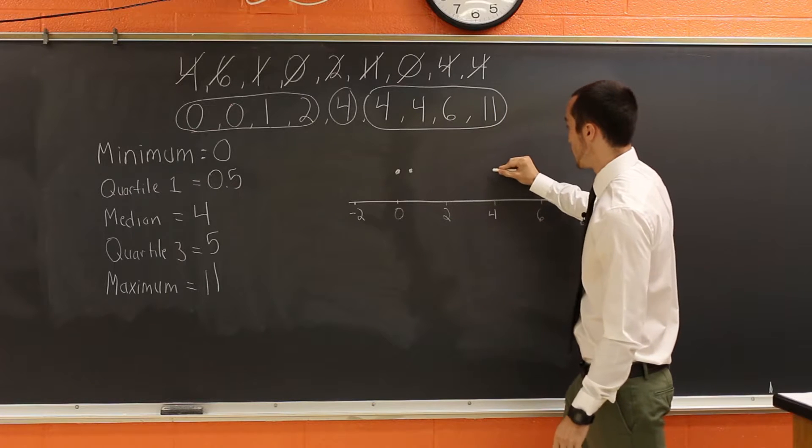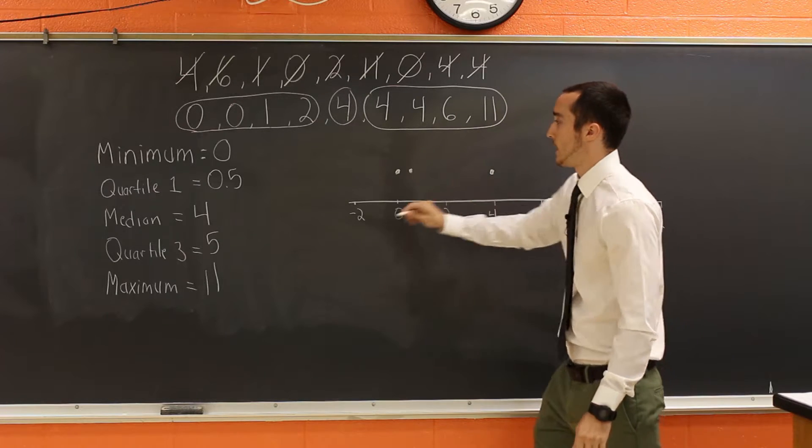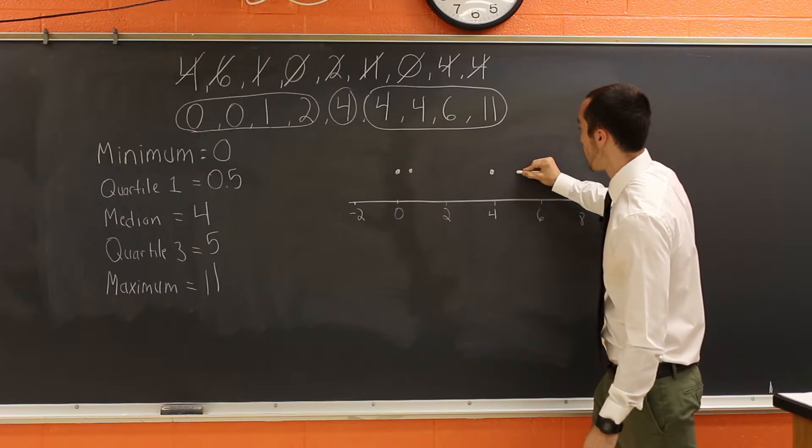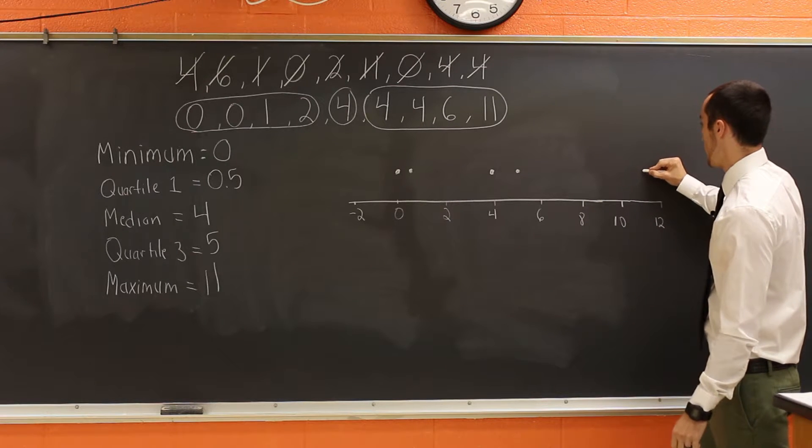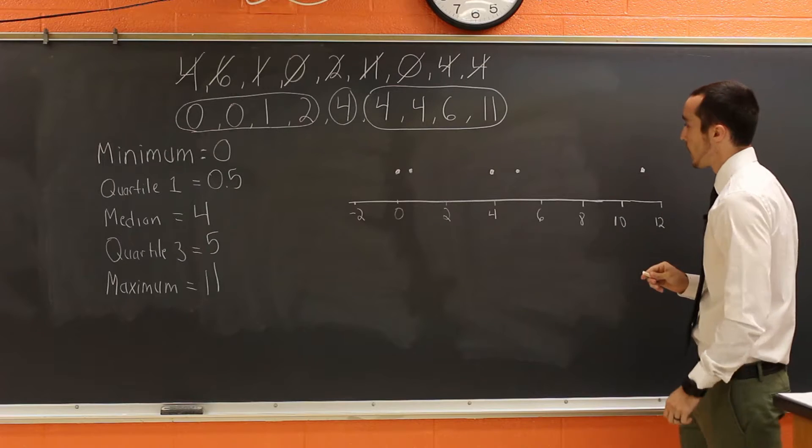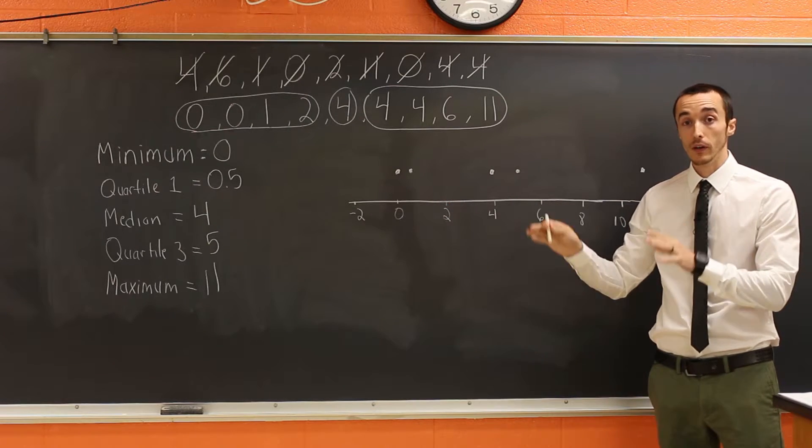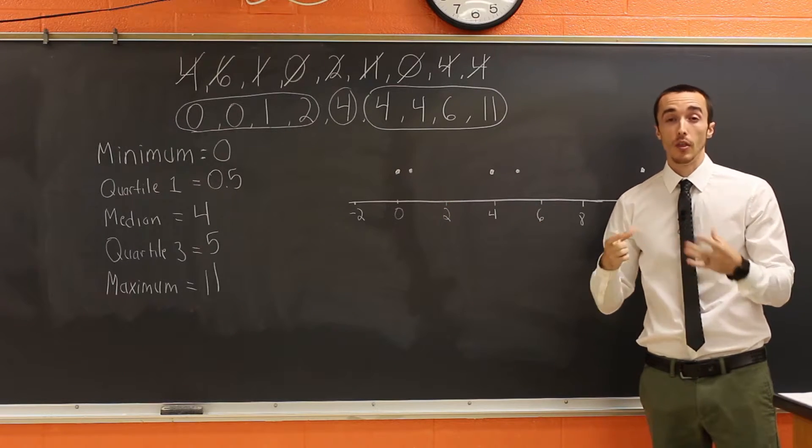I need one at four, which is right here. I need one at five, which would be right here. And then I need one all the way at 11. So now that we've got our numbers floating, it's time to actually draw the box and whiskers.